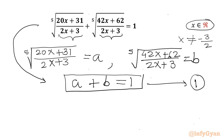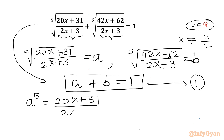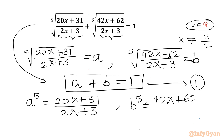From the substitution equations, I can write a⁵ = (20x + 31)/(2x + 3), and b⁵ = (42x + 62)/(2x + 3).